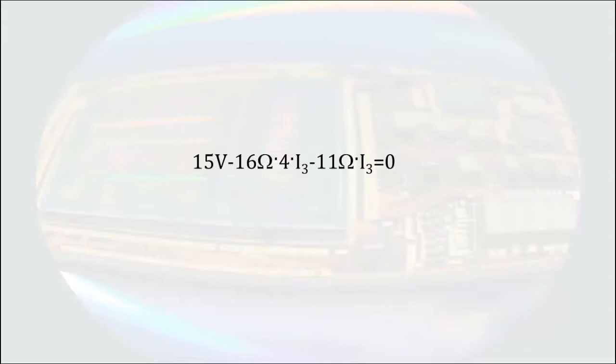Performing the multiplication, we have 15 volts minus 64 ohms I3 minus 11 ohms I3. Combining the I3 terms, we have 15 volts minus 75 ohms times I3. Solving for I3 gives us I3 equals 1 fifth of an amp,